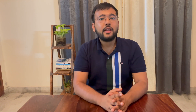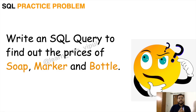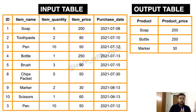Don't forget to hit the subscribe button so that you don't miss any updates. Now let's understand the practice problem first. We need to write an SQL query to find out the prices of soap, marker, and bottle. On the left side we have the input table and on the right side we have the desired output table.